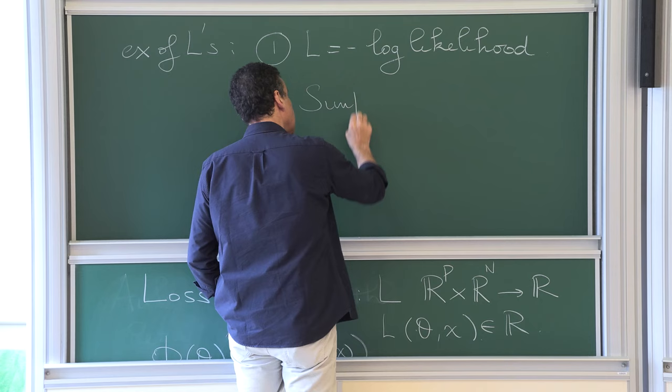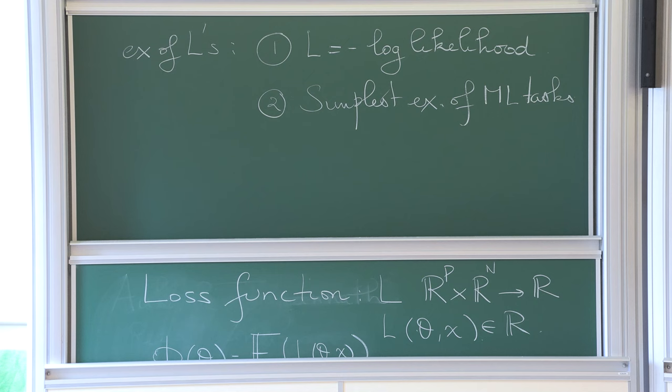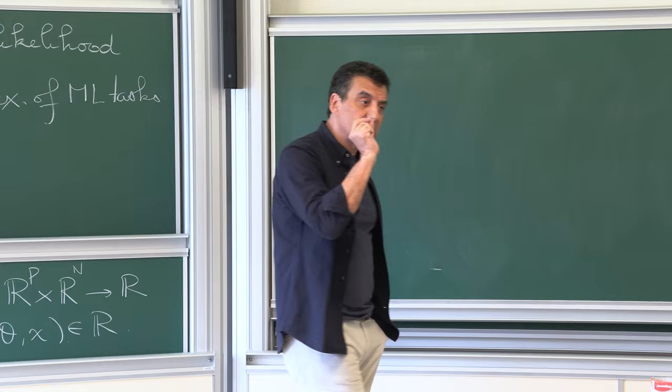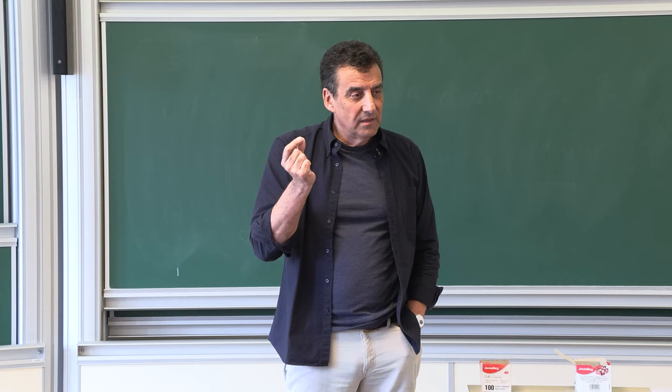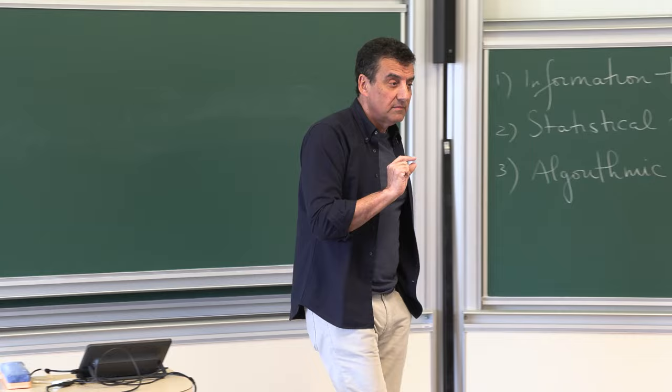Let me give you the simplest examples of machine learning tasks. The fantastic thing about machine learning is that it's just a specific choice of L — that's all it is — but it's incredibly efficient, even though we don't really understand why.